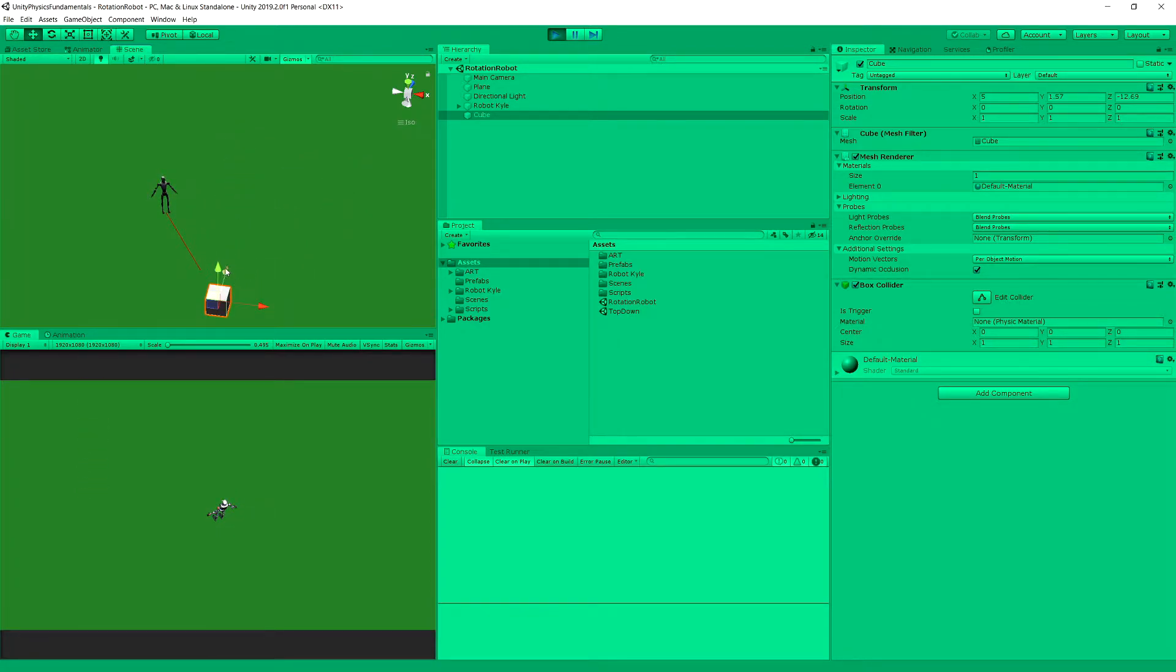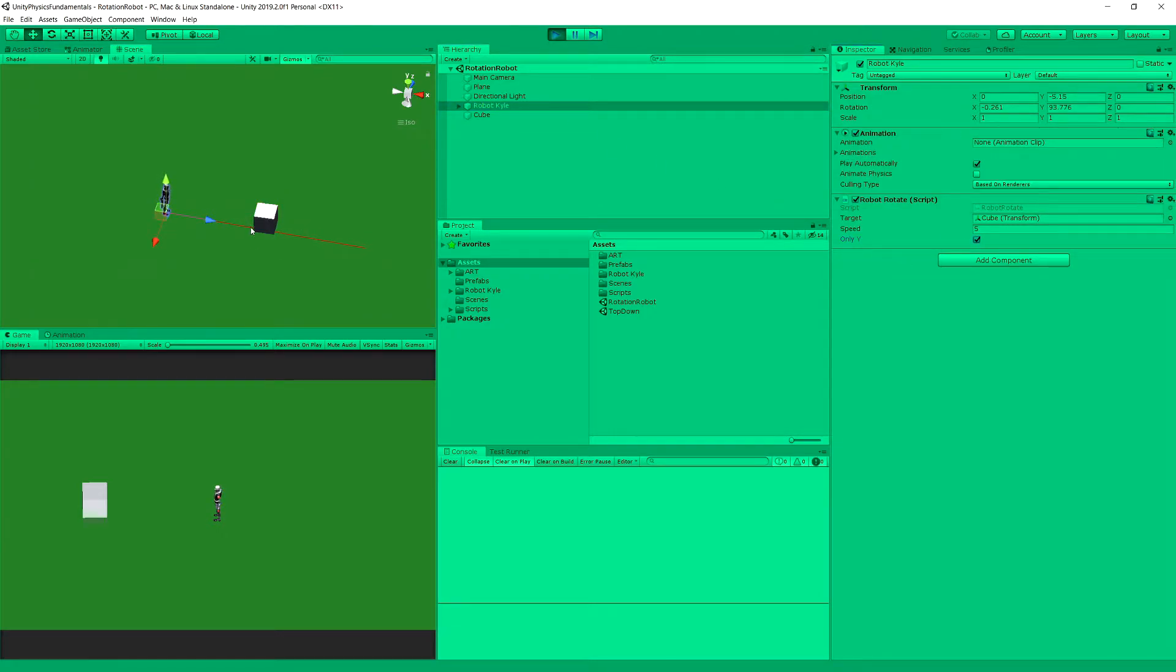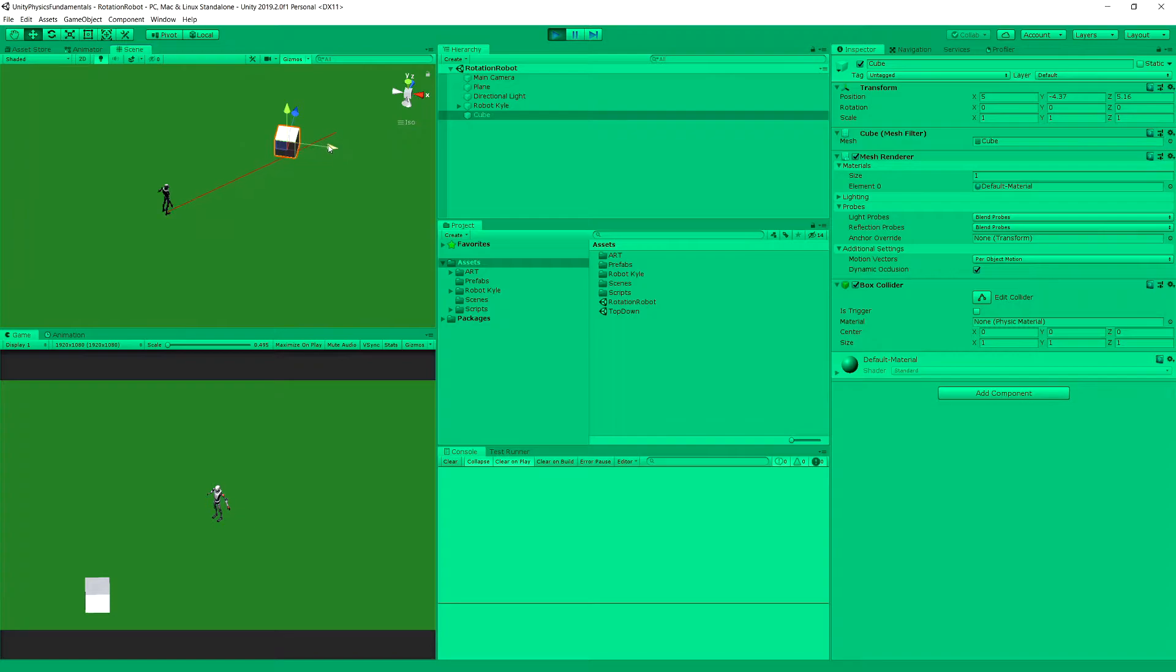Now, to prevent that, because we might not want to rotate like this, we can make this flag only y. And in this case, our robot will only follow on the x-z plane, the cube. But how does it work?